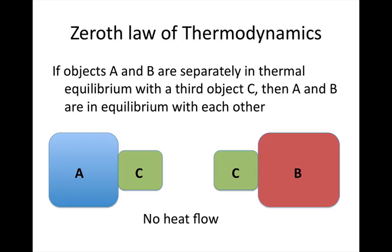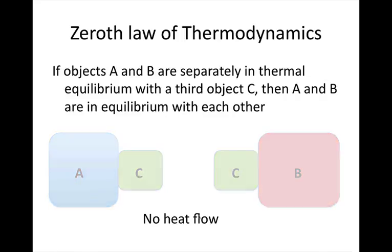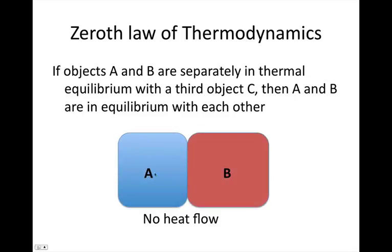Okay, so to start with, the zeroth law of thermodynamics. The zeroth law simply states that if object A and B are separately in thermal equilibrium with object C, so that means no heat flows between A and C or between B and C, then object A and B are in equilibrium with each other. So A and B, there's no heat flow between A and B, as there was no heat flow between A and C or between B and C.